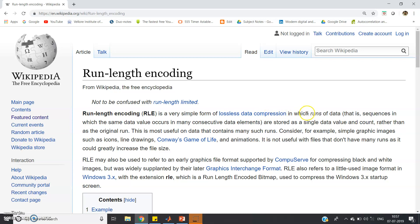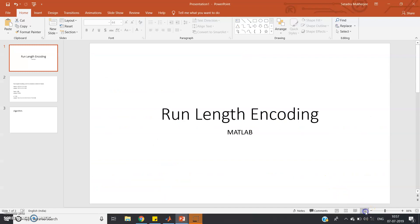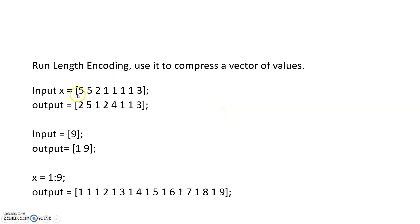In run length encoding, runs of data — sequences where the same data values occur in many consecutive elements — are stored as a single data value and count. For example, consider the input: 5 5 2 1 1 1 1 3. The output would be: 2 5 (two consecutive fives), then 1 2 (one time two), then 4 1 (four ones), then 1 3 (three appearing once).